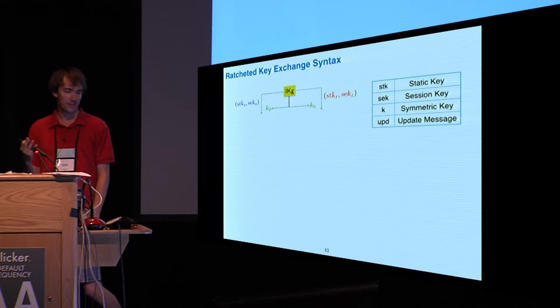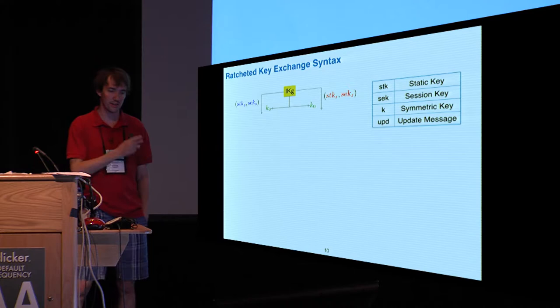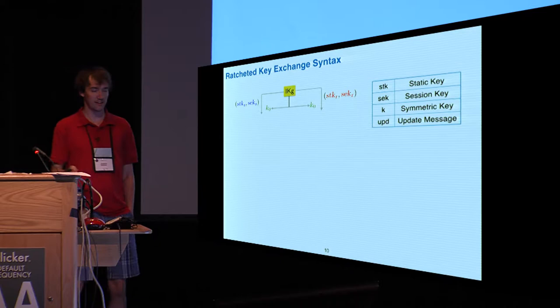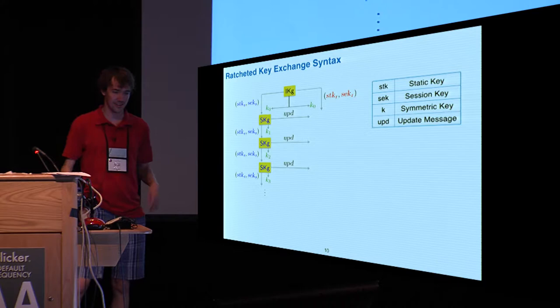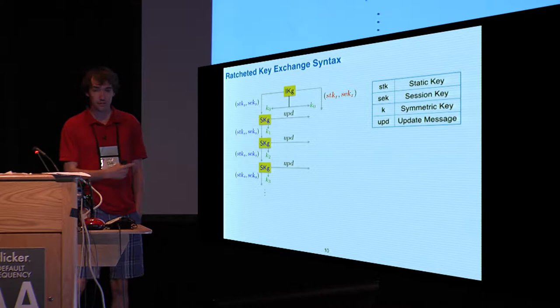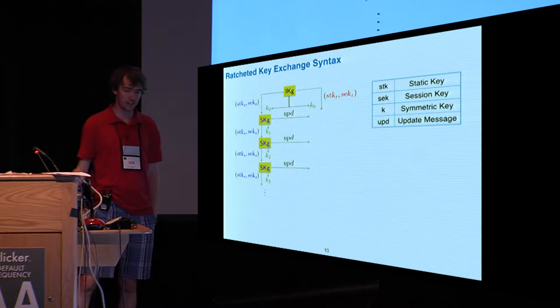So let's get into our formalism. What do I mean by ratcheted key exchange? We're going to think of both the sender and receiver as having kind of three keys: a static key, which never changes throughout the duration of the protocol; session keys, which get updated with every ratchet; and then the symmetric keys are the keys actually output by the protocol to be used.